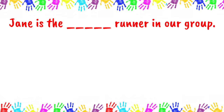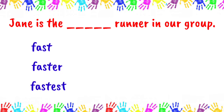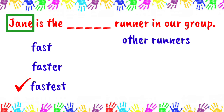Next: 'Jane is the ___ runner in our group.' Fast, faster, or fastest? The answer is 'fastest,' because Jane is being compared against all other runners in their group, so we use the superlative degree.